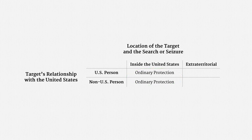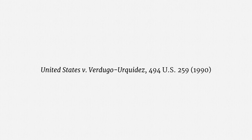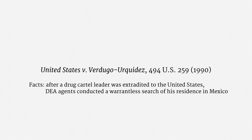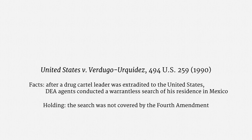Now it gets harder. Let's turn to the category of non-U.S. persons who are outside the United States and who are the target of a search or seizure outside the United States. The Supreme Court expressly addressed this fact pattern in the leading case of United States v. Verdugo-Urquidez. The leader of a drug cartel was arrested in Mexico and extradited to the United States. While he was incarcerated before his trial, DEA agents conducted a warrantless search of his residence in Mexico. He moved to suppress the evidence from that search as a violation of the Fourth Amendment. Both the District Court and the Court of Appeals would have applied the Fourth Amendment and suppressed the evidence. A majority of the Supreme Court disagreed, and held that the search was not covered by the Fourth Amendment.